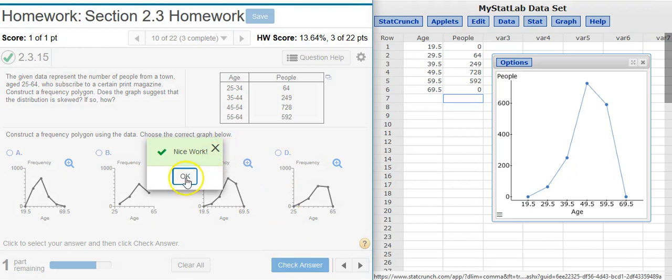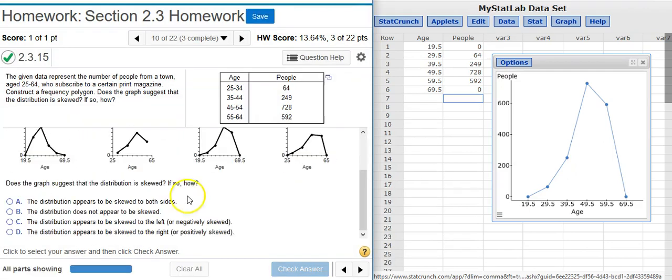Now the second part of this problem asks, does the graph suggest that the distribution is skewed? If so, how? Well, just look at your graph. It's not symmetrical. Actually all the data is pushed over here on the right.